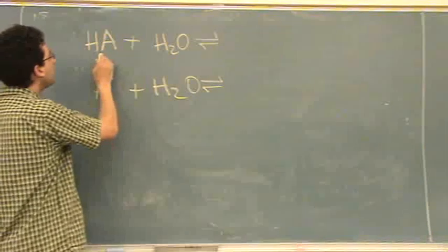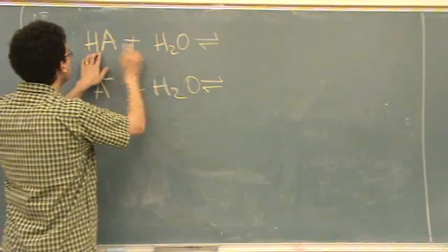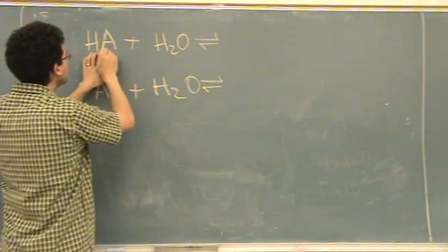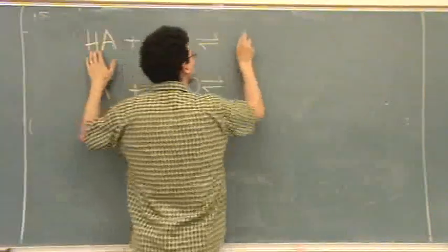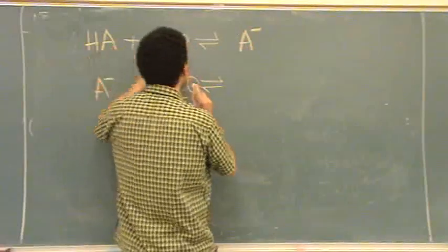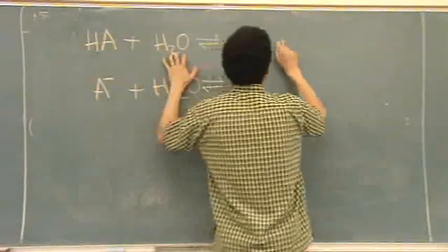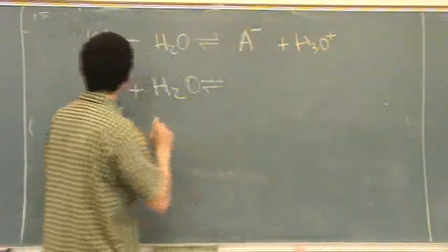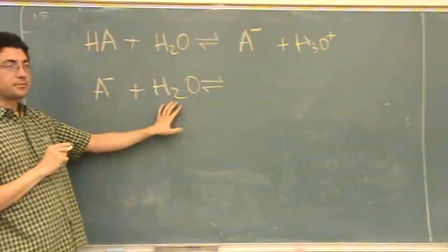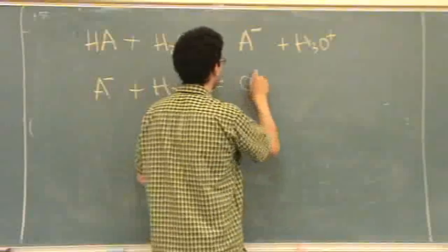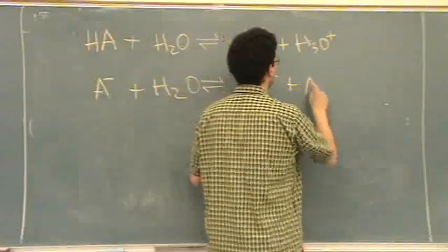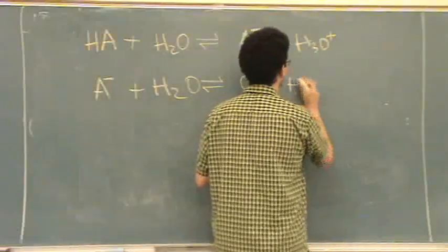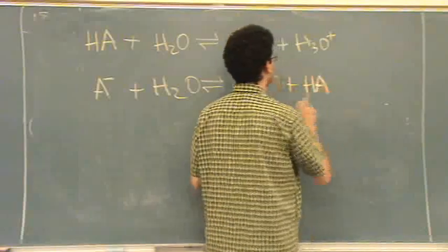So water, if you have an acid, the HA is going to donate the acid and the water will act as a base and accept the acid. Here, the base will take the proton from water and be left as HA.